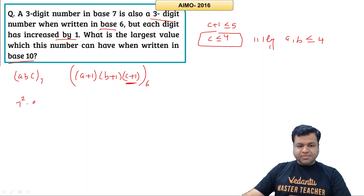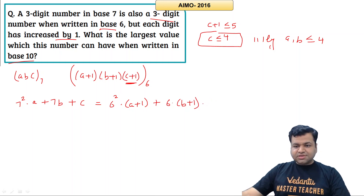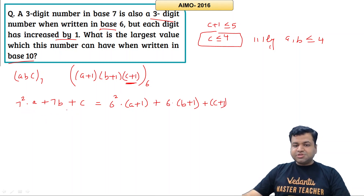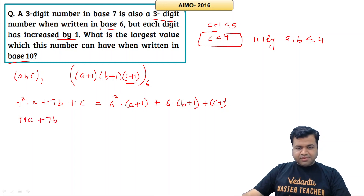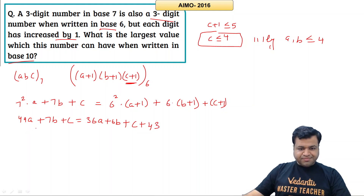In base 10: 7²·A + 7·B + C = 6²·(A+1) + 6·(B+1) + (C+1). Simplifying: 49A + 7B + C = 36A + 6B + 36 + 6 + 1, which gives 49A + 7B + C = 36A + 6B + 43. Simplifying further: 13A + B = 43.